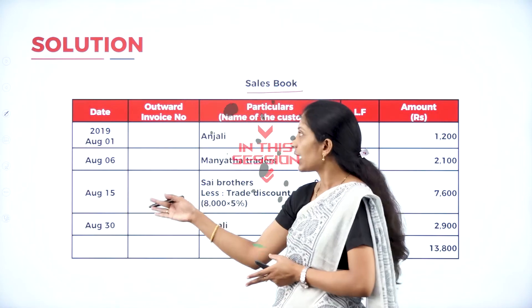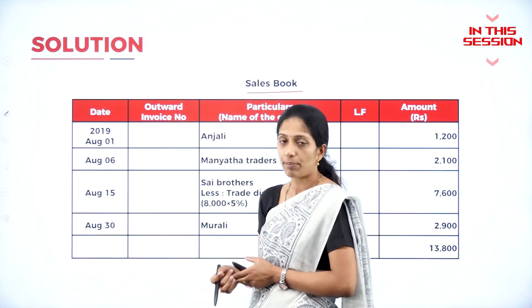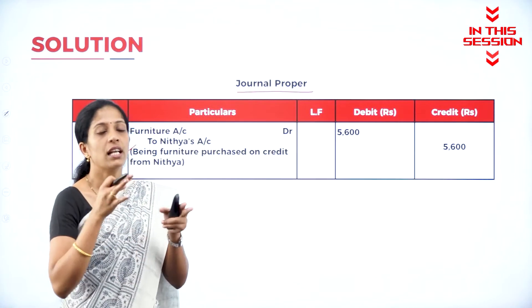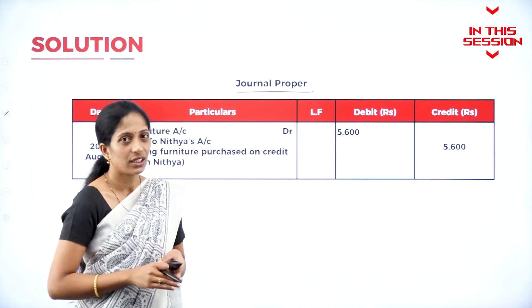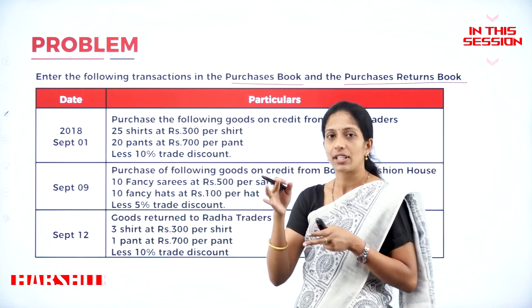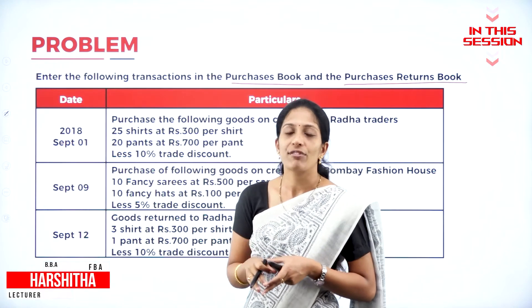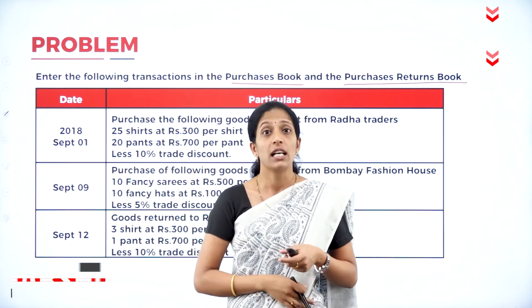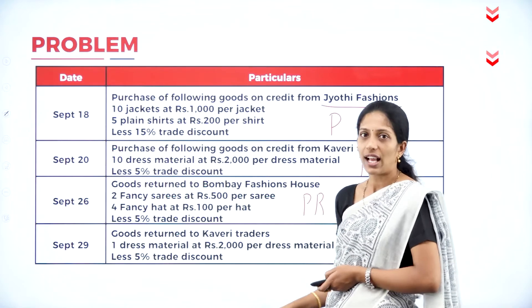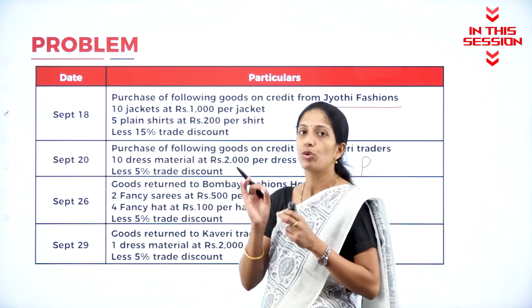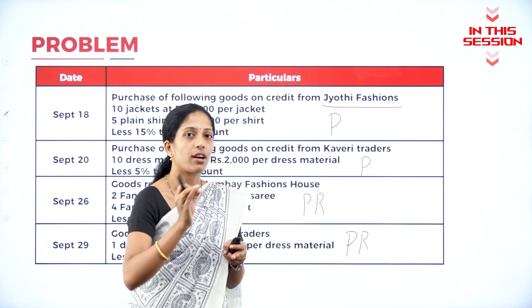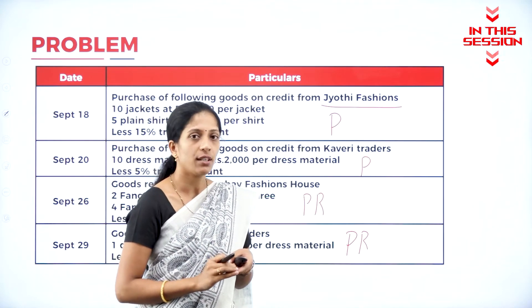What is the format of the sales book? Date, outward invoice number, name of the customers. So when furniture is purchased from Nitya, what is the journal entry? Furniture account debit to Nitya's account. Here they have given certain transactions where we have to record those transactions in the purchase book as well as purchase returns book. We have to calculate each transaction and record in the respective subsidiary books.